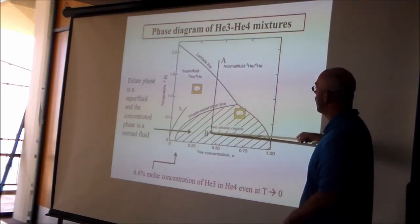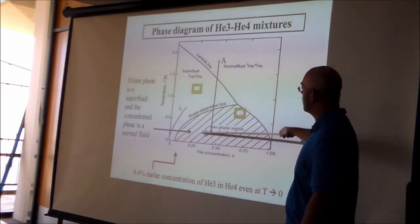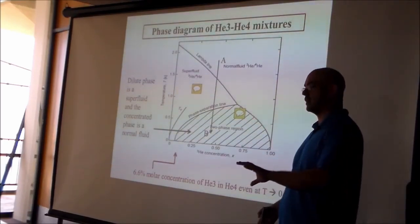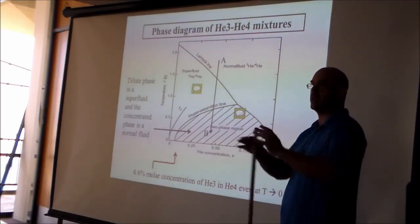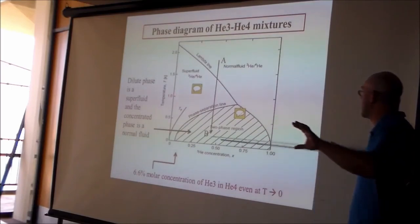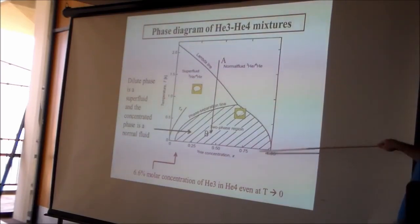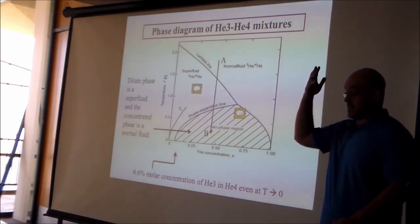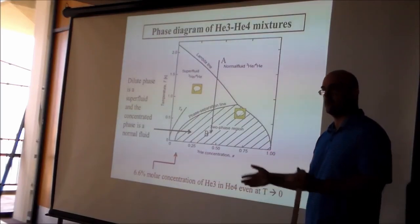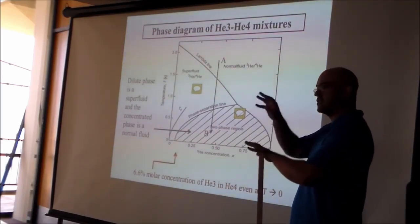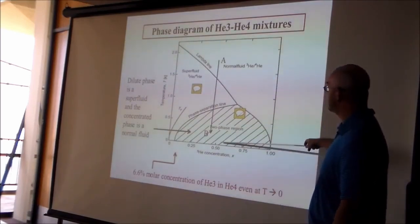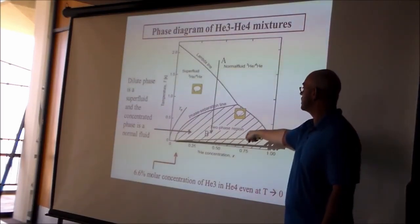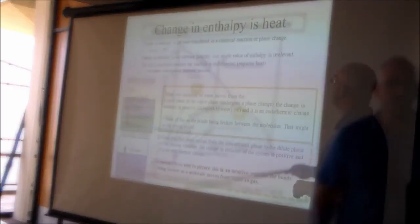At point B on the phase diagram, the lower dilute phase has about 8% helium-3 in a helium-4 environment, and the upper concentrated phase has about 92% helium-3. There is an actual physical separation of the two phases. Importantly, as you approach absolute zero, regardless of the initial helium-3 concentration, the dilute phase always converges to exactly 6.6% helium-3 and the concentrated phase to 100%.